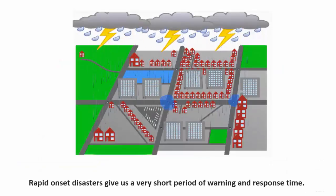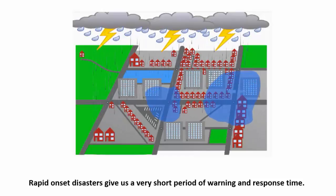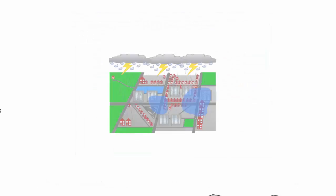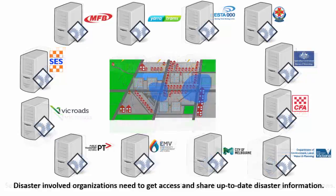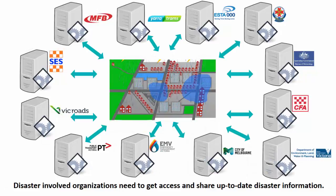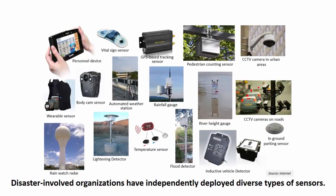Rapid-onset disasters, such as urban flooding, give us a very short period of warning and response time. Several agencies, who might or might not be established organizations in disaster management, are committed to contribute and actively participate during emergency situations. To conduct efficient and effective disaster decision-making during emergency situations, disaster-involved organizations need to get access to and share up-to-date and timely disaster information. Among diverse types of disaster-aiding resources, sensors have become a very important data-gathering technology.